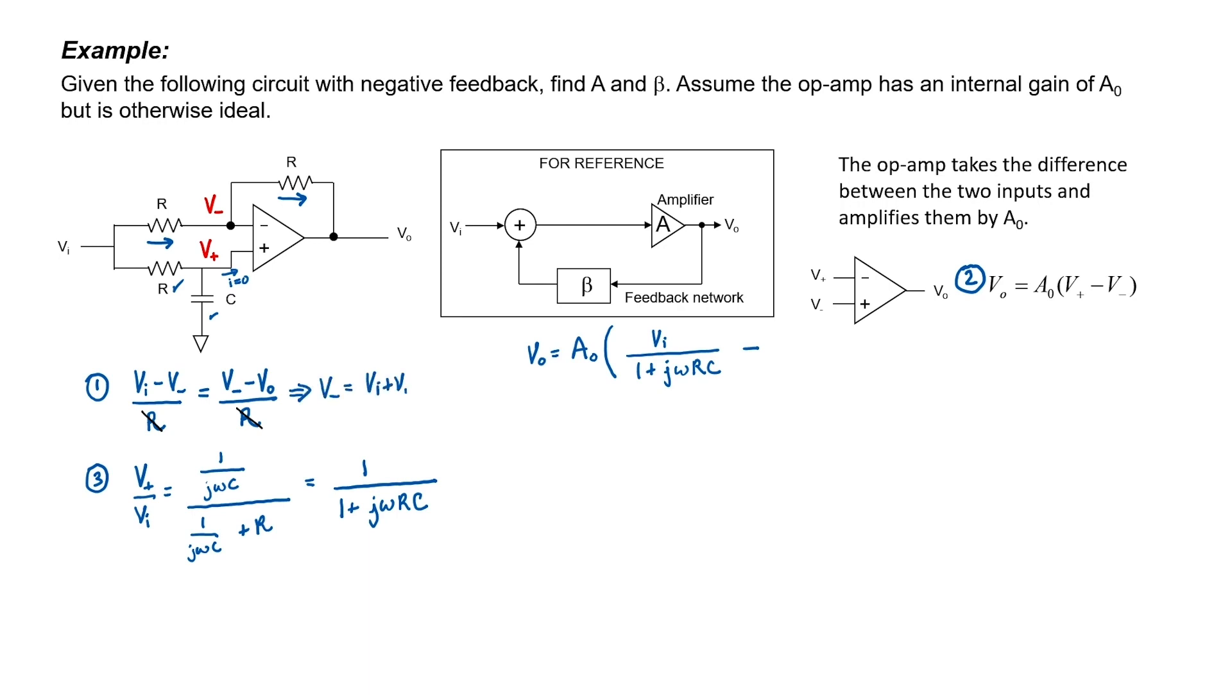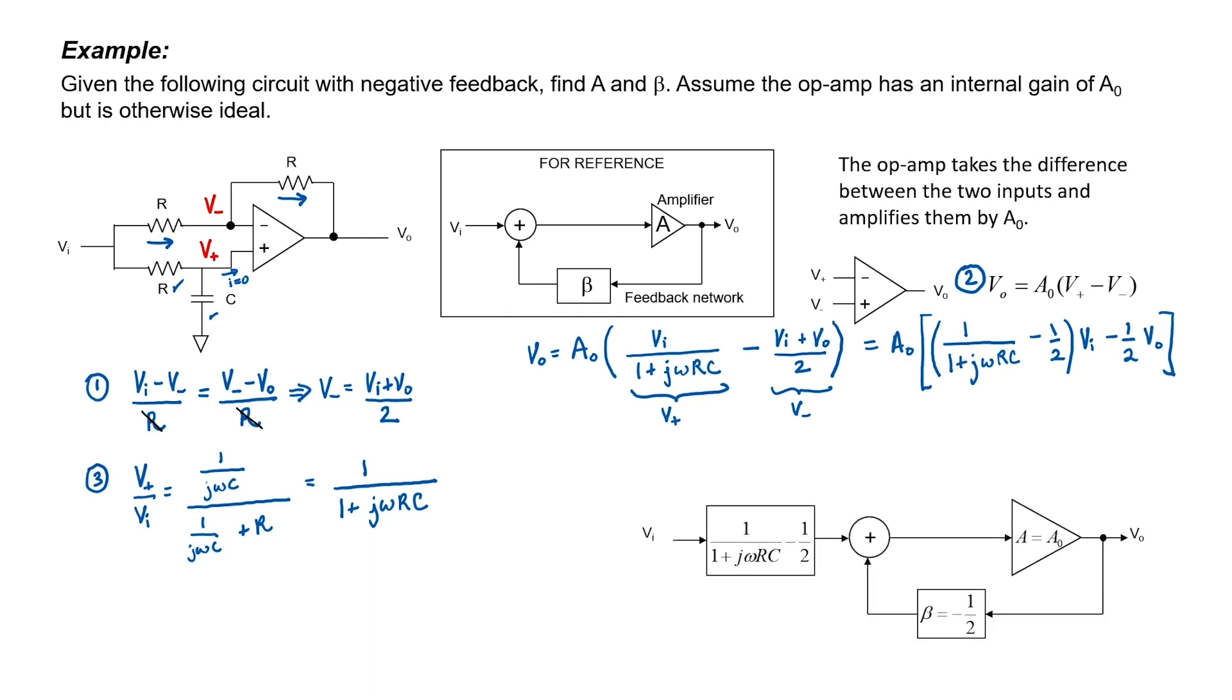In equation one, the R's cancel. I can now substitute equation one in for V minus. By comparison, we can see that what's in the diagram matches the equation that we've just derived. We can now identify that A equals A0 and that beta equals negative 1 half.